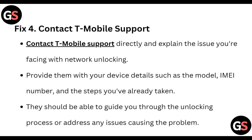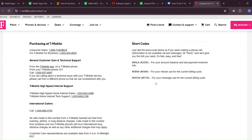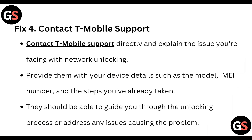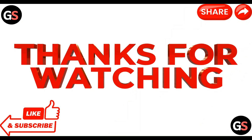Fix 4: Contact T-Mobile Support. Contact T-Mobile Support directly and explain the issue you are facing with the network unlocking. Provide them with your device details such as model, IMEI number, and the steps you have already taken. They should be able to guide you through the unlocking process or address any issue causing the problem.